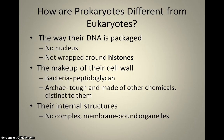They also have a cell wall, and the makeup of their cell wall is different than that of eukaryotic cell walls. In particular, bacteria have a polysaccharide called peptidoglycan that makes up their cell wall, as opposed to eukaryotic cell walls in plants that have cellulose.